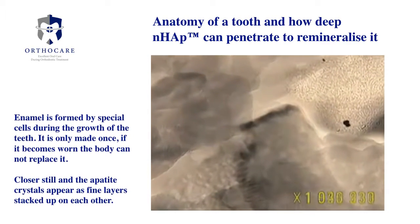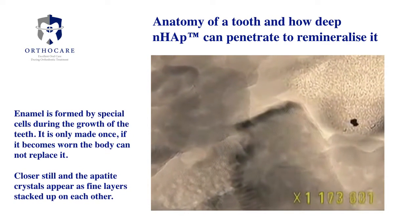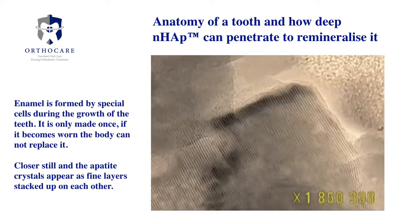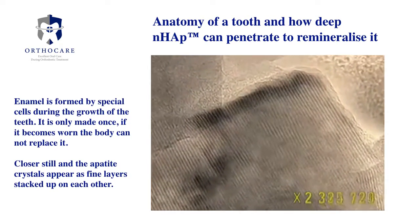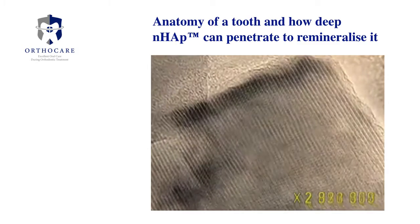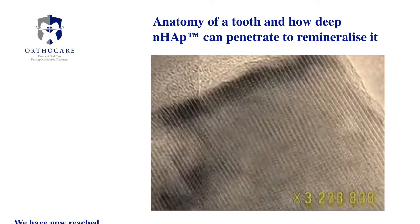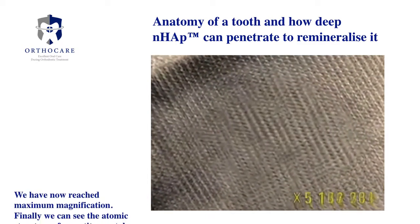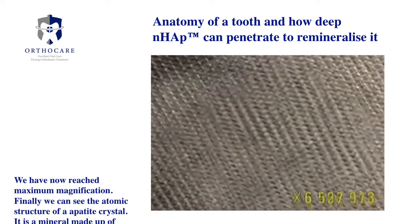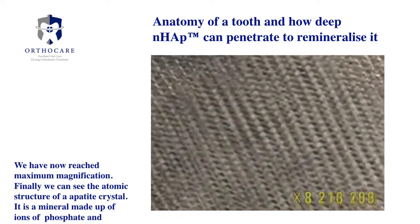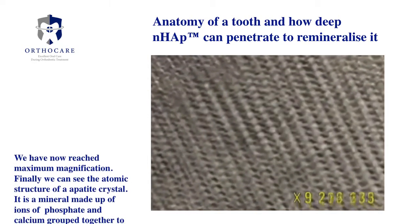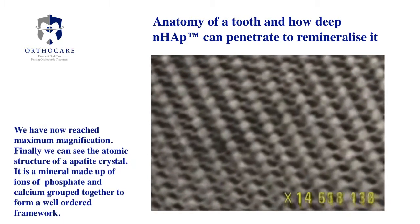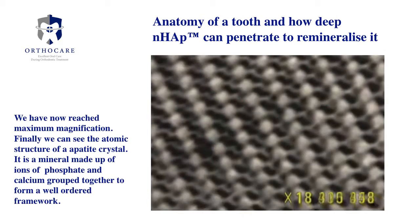Closer still, and the apatite crystals appear as fine layers stacked up on each other. We've now reached maximum magnification. Finally, we can see the atomic structure of an apatite crystal — it's a mineral made up of ions of phosphate and calcium, grouped together to form a well-ordered framework.